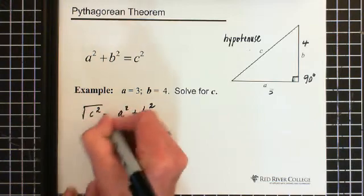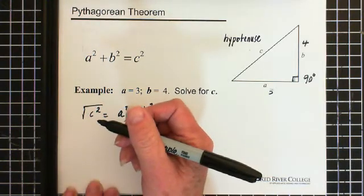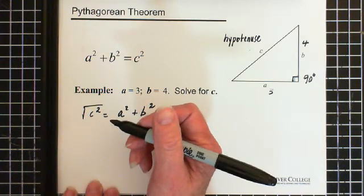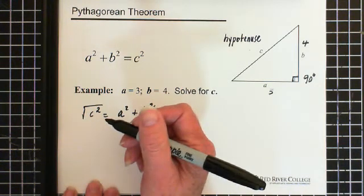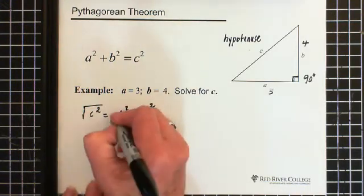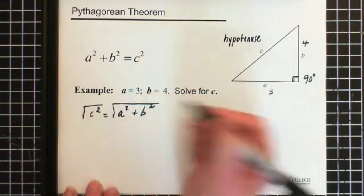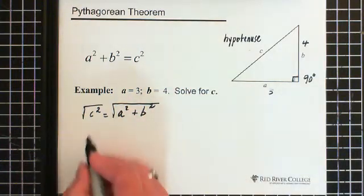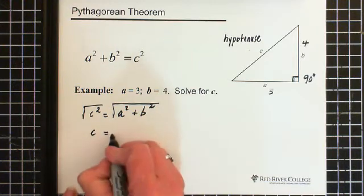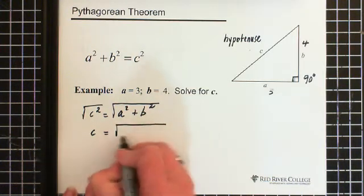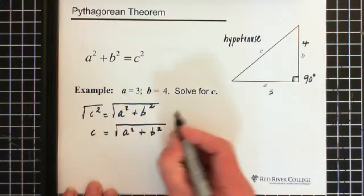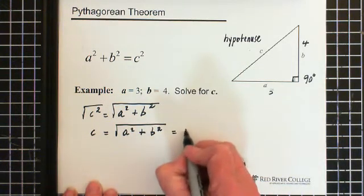And if you're not sure how to do this or why this is happening, go look on the videos that talk about powers and radicals. So we square root this, and if we square root on the left side, we have to square root on the right side. The square root of C squared is C. Now that equals the square root of A squared plus B squared. Now what we do is we just plug in our numbers.